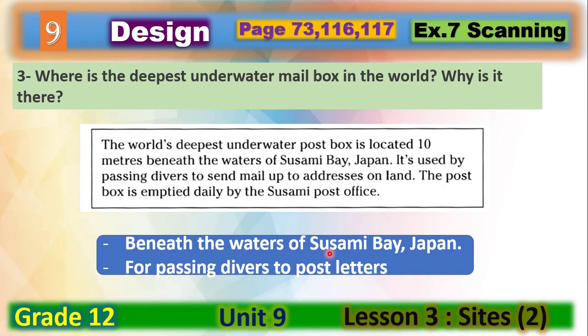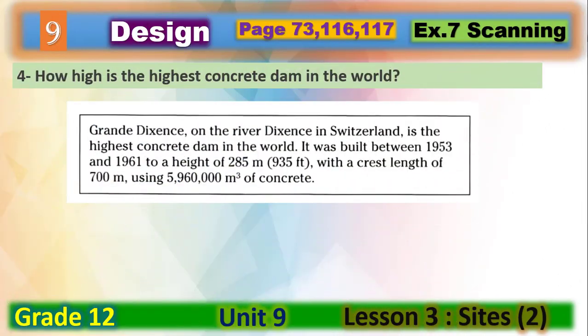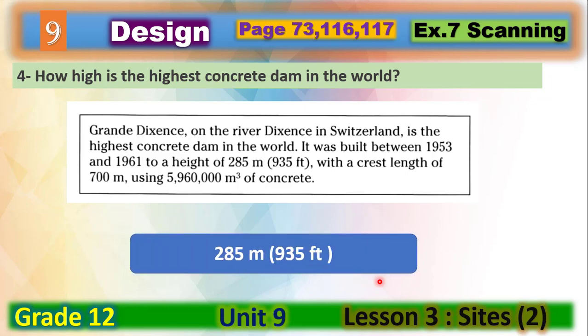The last question: how high is the highest concrete dam in the world? It is 285 meters, or 935 feet.